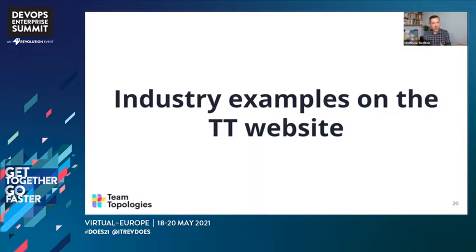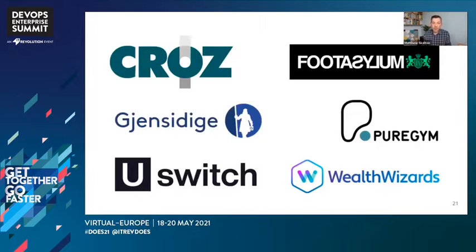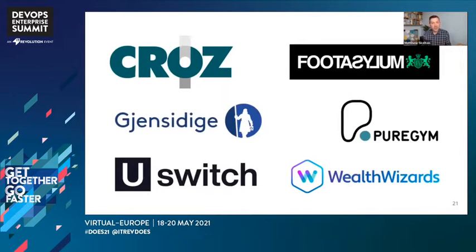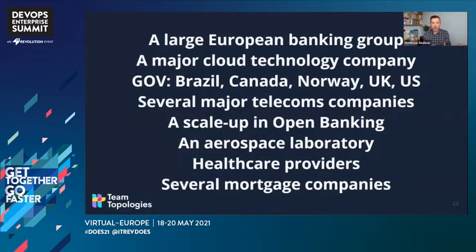Since the book was published, we've got many more examples on the Team Topologies website: Cross, Foot Asylum, Gen Sidiga, Pure Jim, another example from USwitch, and Wealth Wizards. And we've got a whole bunch of organizations that Manuel and I have worked with since 2019 — banking, technology, many different government departments around the world, telecoms, open banking, aerospace, healthcare, mortgage and so on. Loads of organizations are starting to adopt and use Team Topologies ideas.